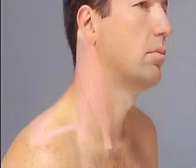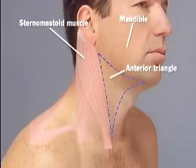Before we examine the neck, let's look at the pertinent structures. For descriptive purposes, each side of the neck is divided into two triangles by the sternomastoid muscle. The anterior triangle is bounded above by the mandible, laterally by the sternomastoid, and medially by the midline of the neck.